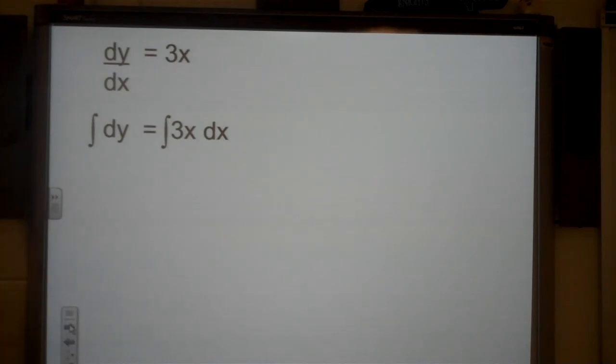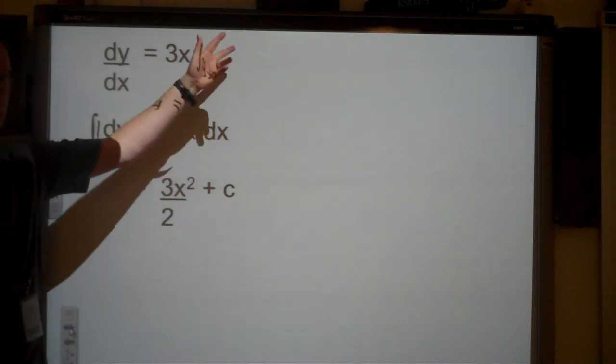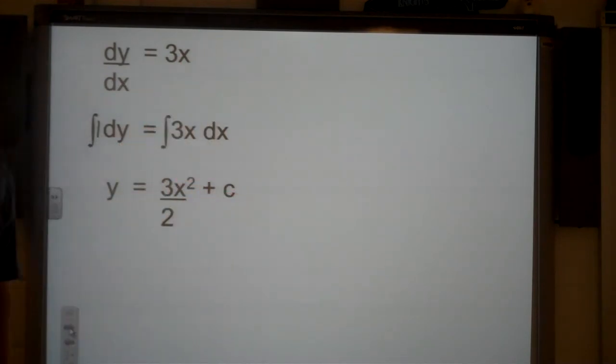At this stage you might want to say, as there's nothing here, you might want to just say this is 1 dy, so you know exactly what's going on here. So if I integrate 1 with respect to y, that's just going to give me y, and the integral of 3x is going to be 3x squared over 2. As I don't have any initial values for this, all I can say is this is plus c, and that's what makes this just a general equation at this stage.